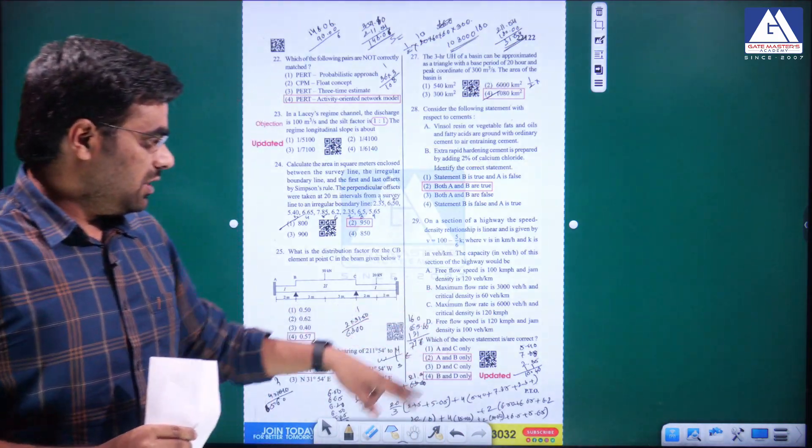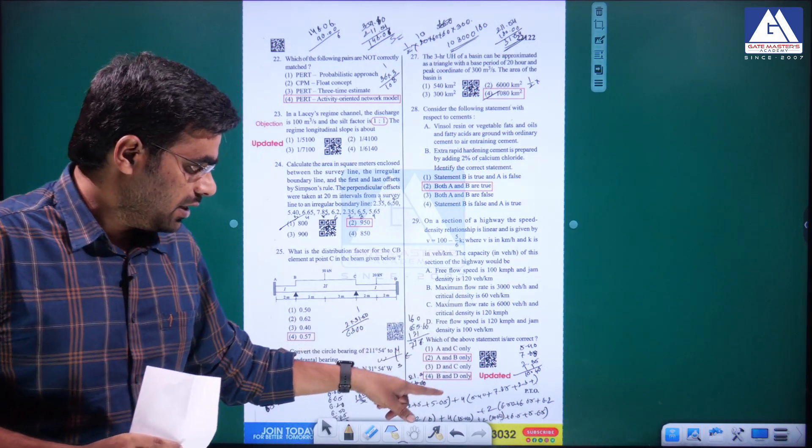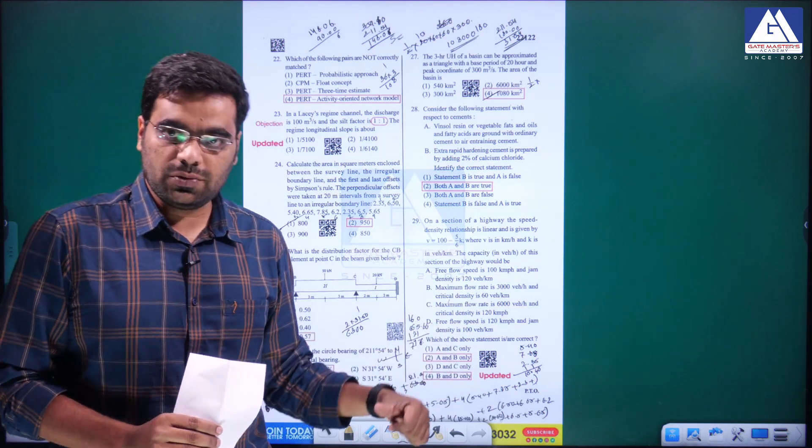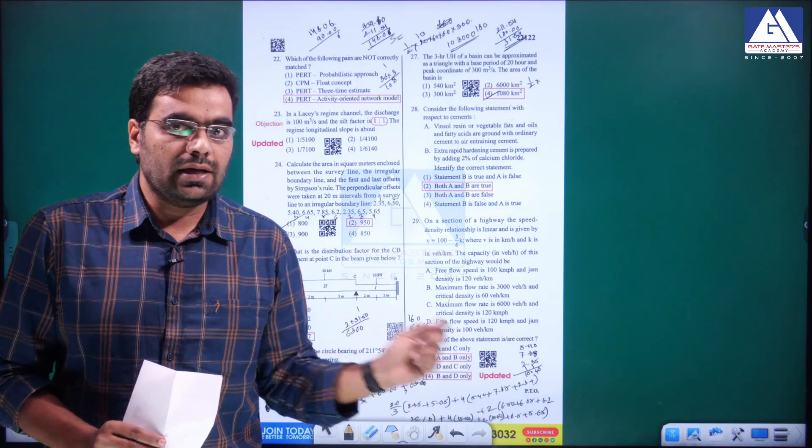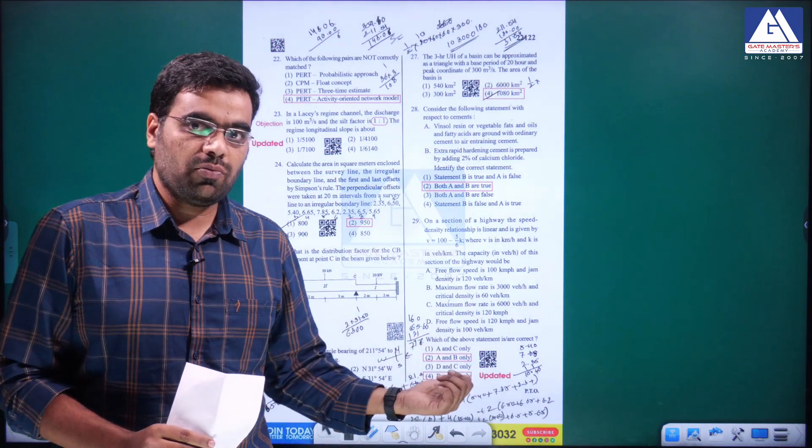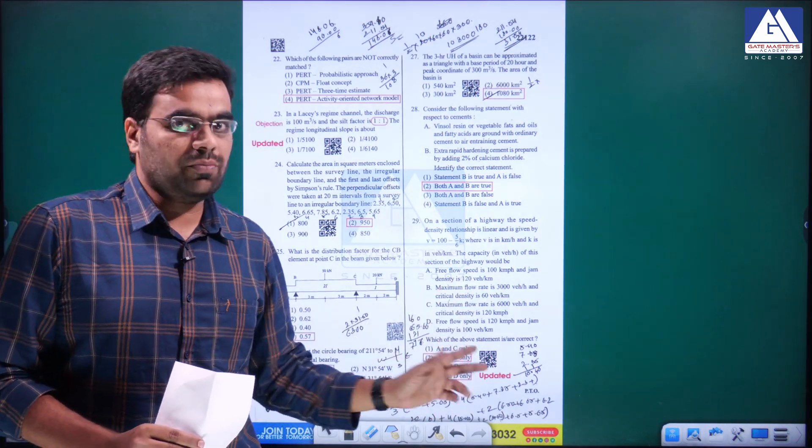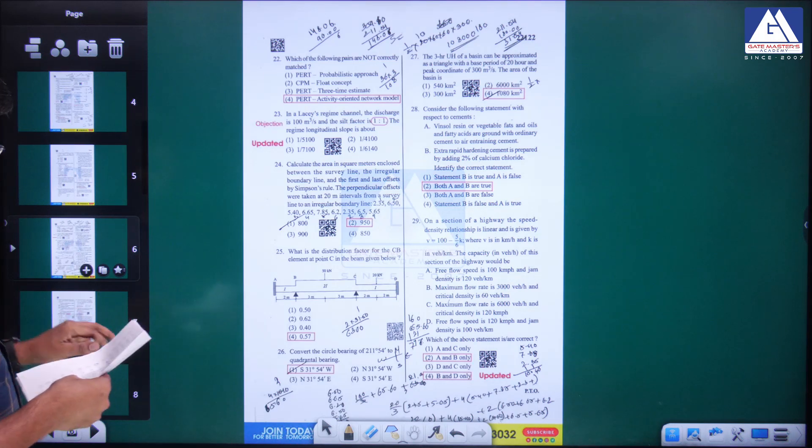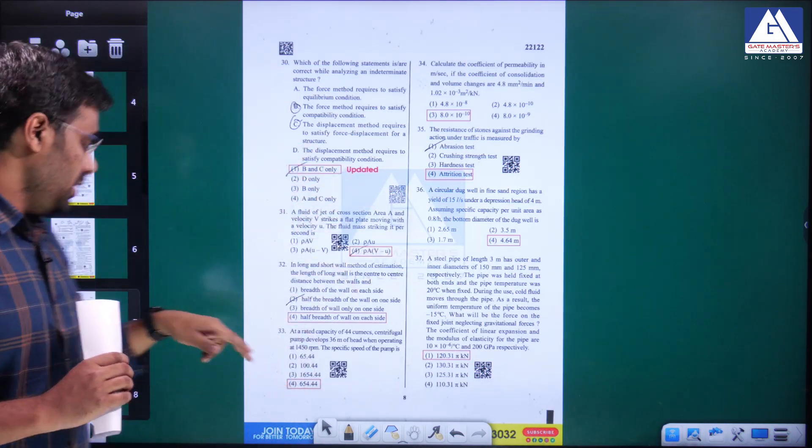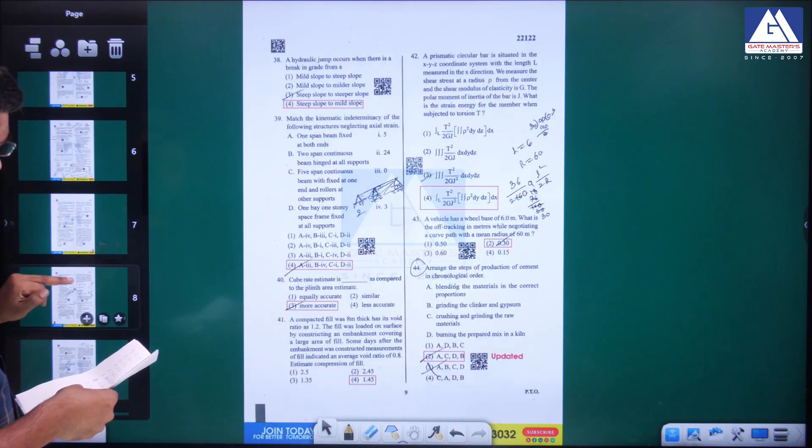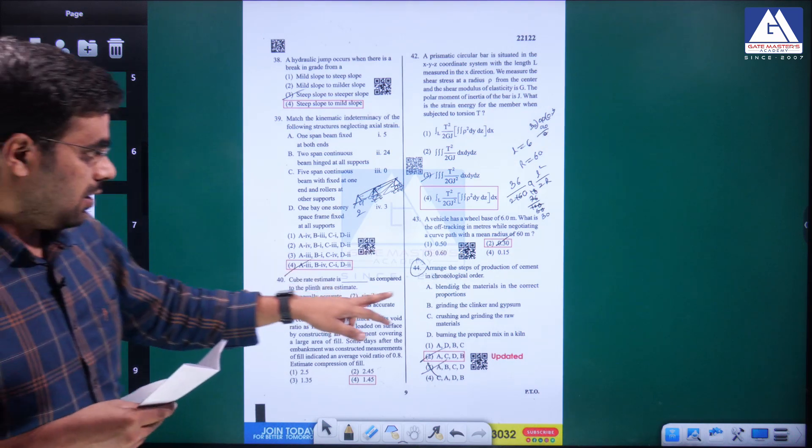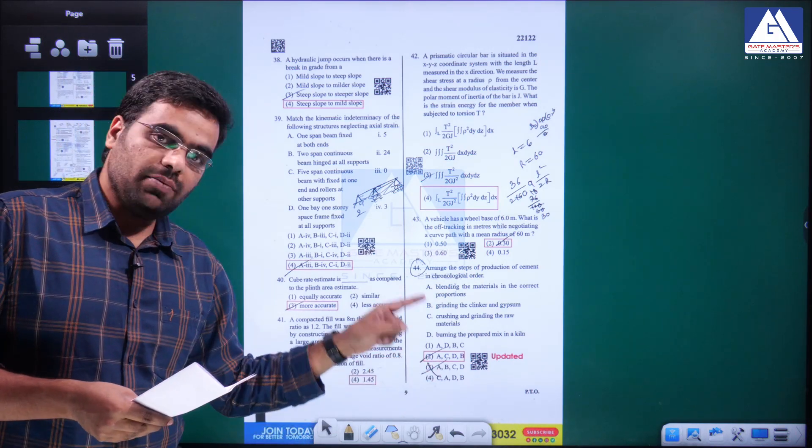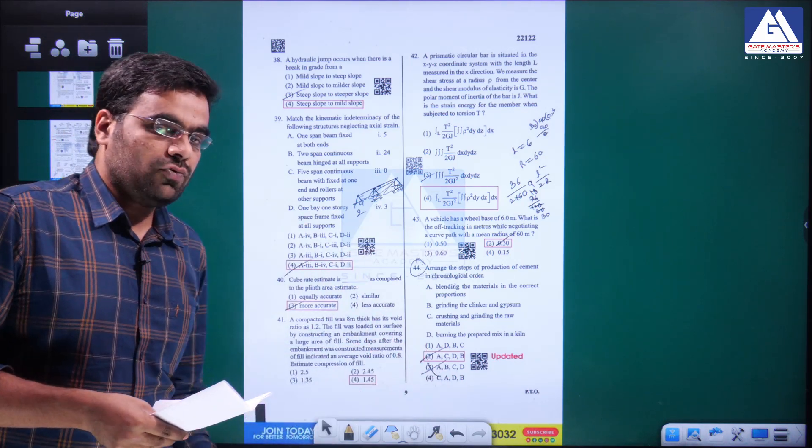Question number 29 - if you see, there are two options, not option C, but options B and D are there. If you have any doubt, we uploaded complete clear details on Gate Masters Academy YouTube channel. Transportation was explained by one of the best faculty, PhD from IIT Kharagpur. Check that solution. Check question 29 and question 23 in this slide, and if you go to the 7th slide, this is the updated one.